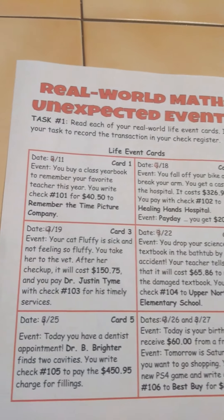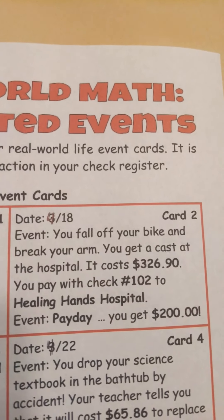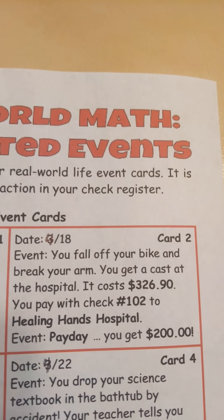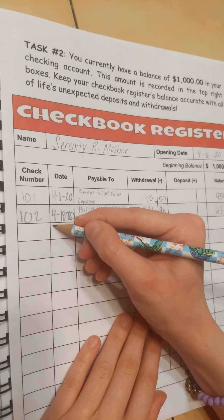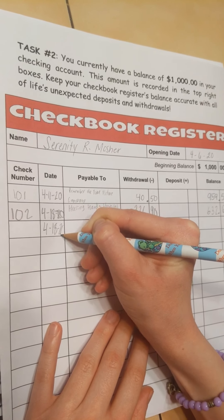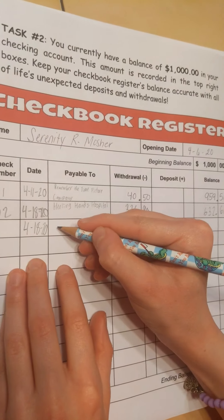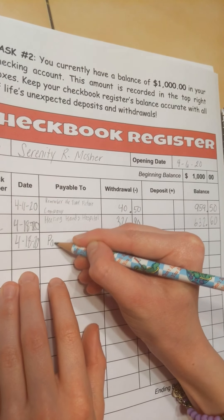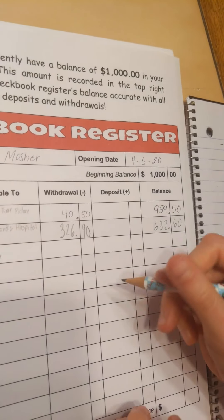We were lucky that also on April 18th it was a payday, so that means we get to deposit. We get to be paid $200. I don't need to write any checks. Make sure to write the date — dating anything is always a good idea. Instead of payable, we just write 'payday' to remember that was money being added. It's not going to be a withdrawal; it's going to be under deposit.